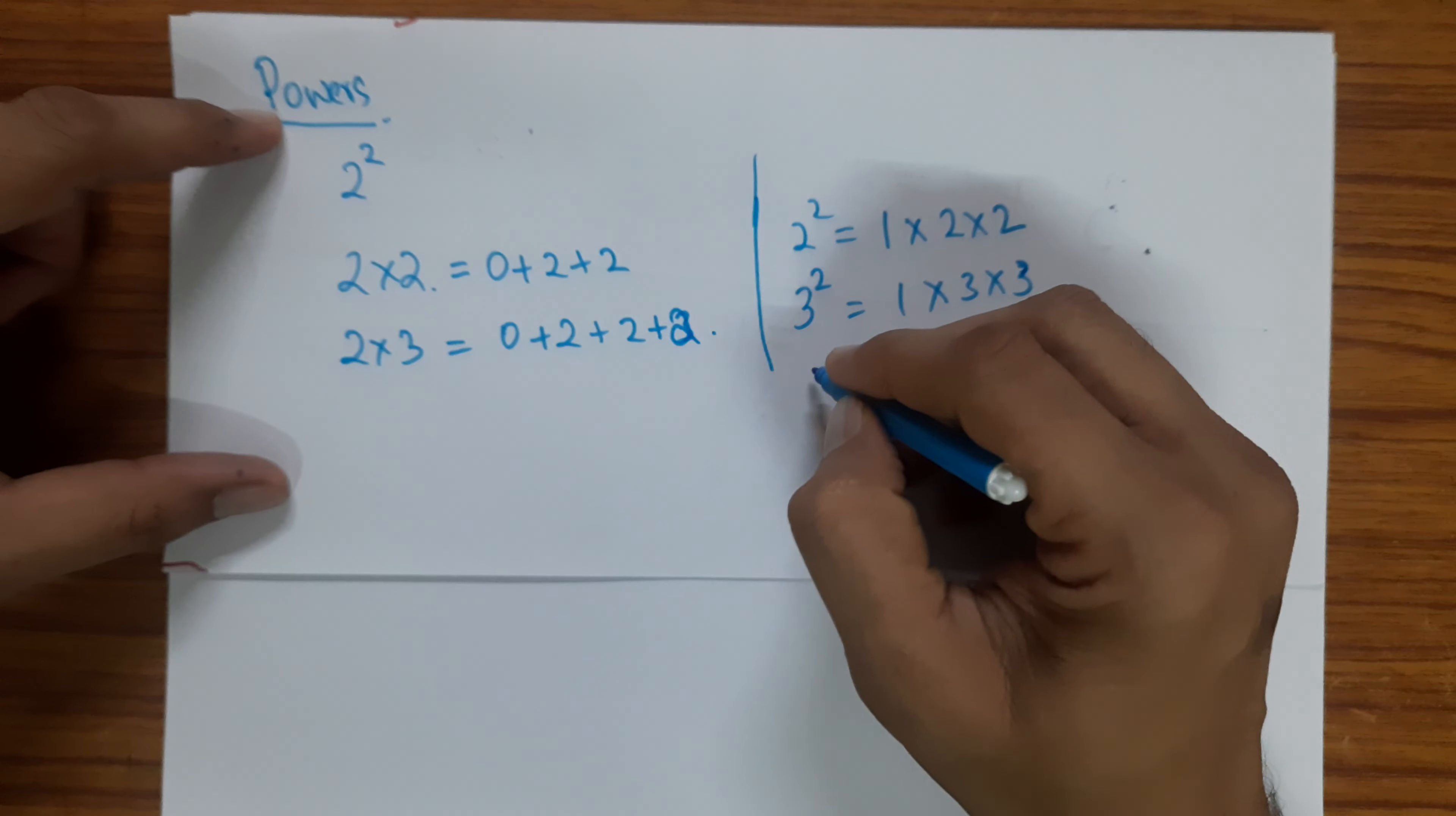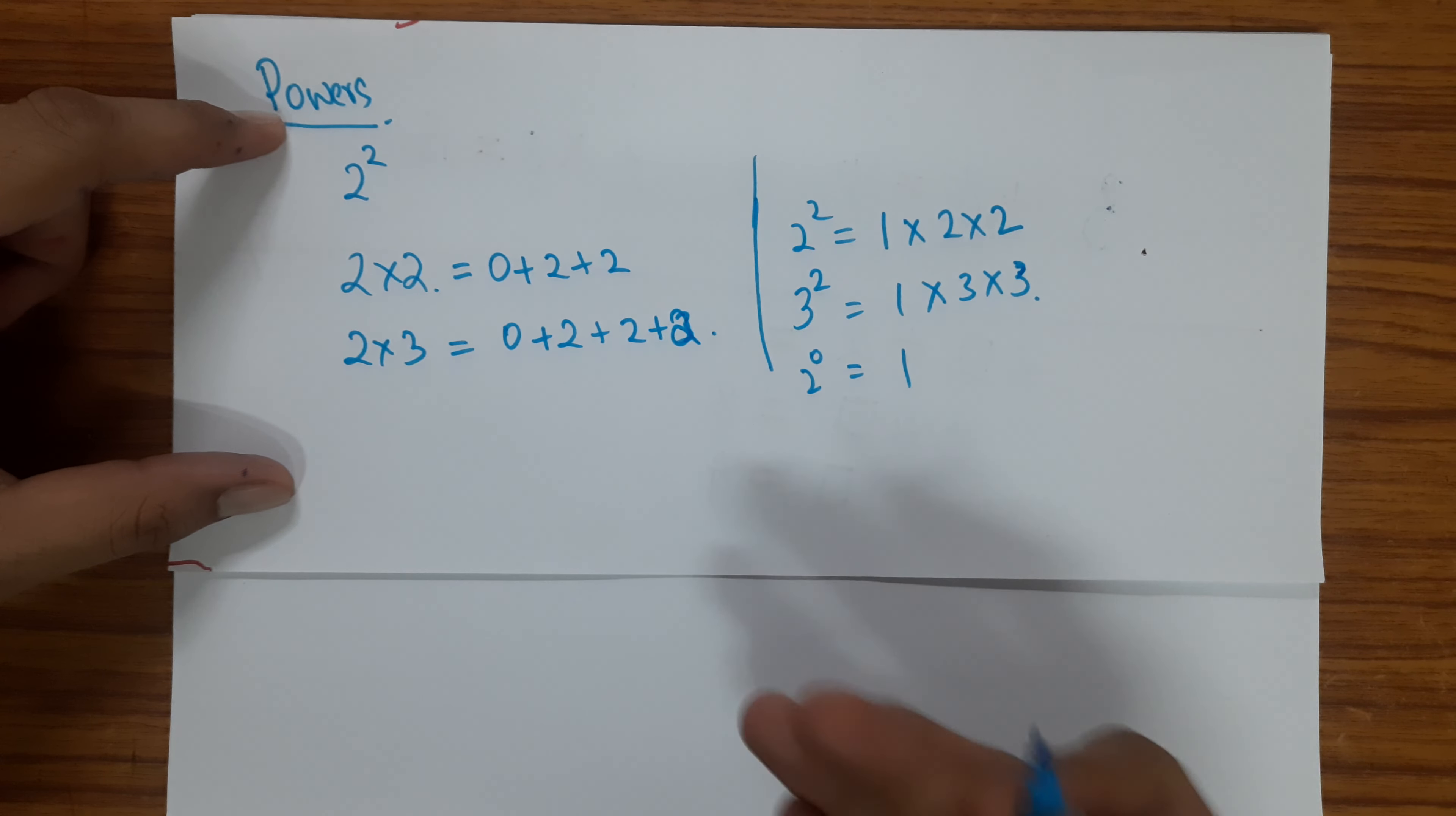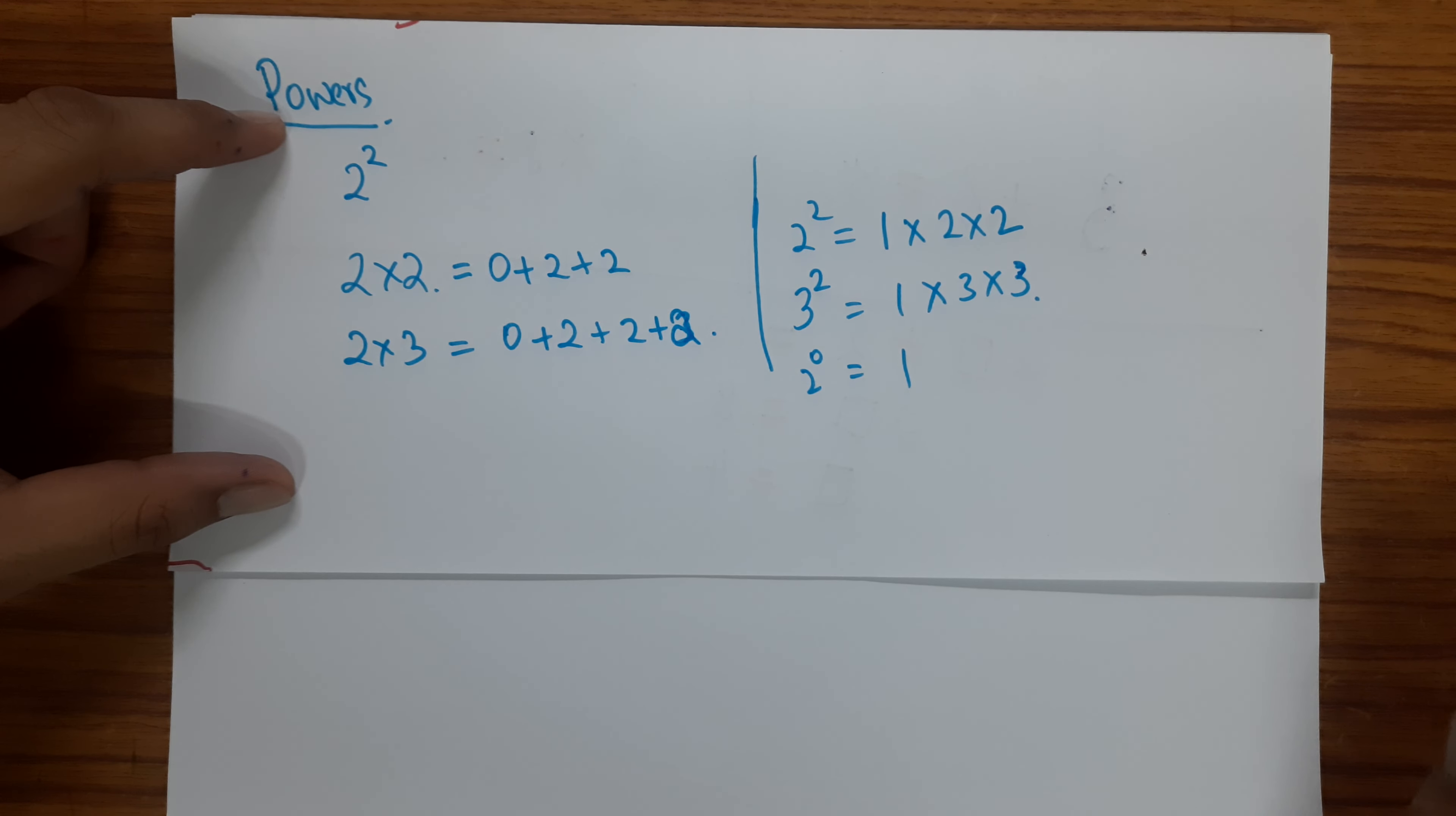So then when you say 2 power 0, there is no surprise. 2 power 0, I am not multiplying any 2 to identity 1. So you start with the definition that already captures 2 power 0 as 1.